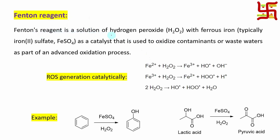Before going into details, let's learn a little bit about iron sulfate and hydrogen peroxide, which is known as Fenton's reagent. This Fenton's reagent is a solution of hydrogen peroxide with ferrous iron, i.e., Fe2+. Typically, iron sulfate heptahydrate is used. Iron in the +2 oxidation state is not that stable. It is a catalyst used to oxidize contaminants in wastewater as part of advanced oxidation. So it is a powerful oxidizing agent.